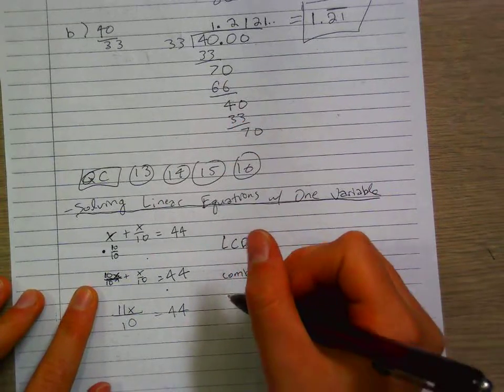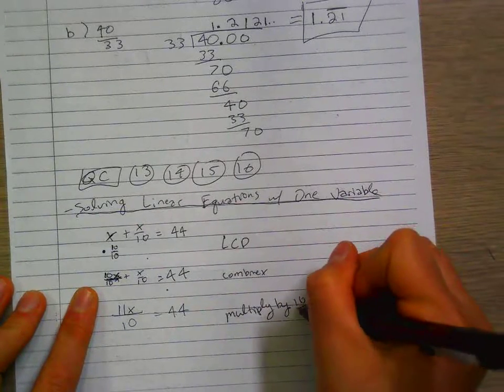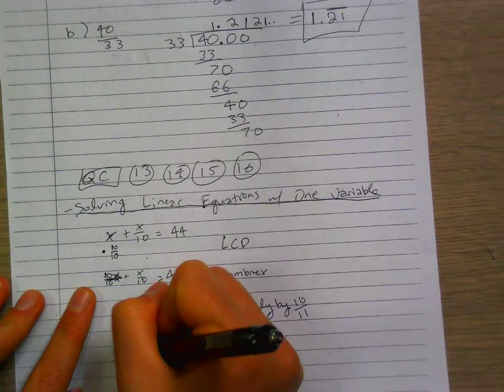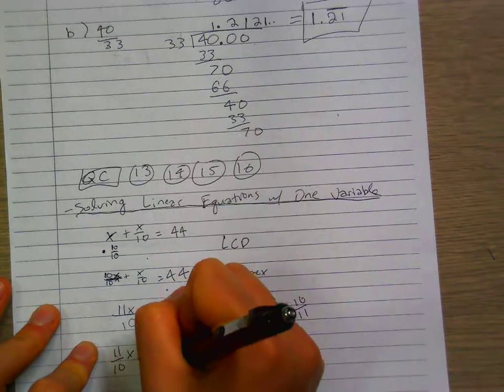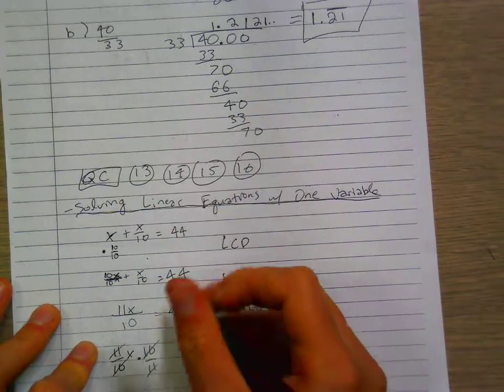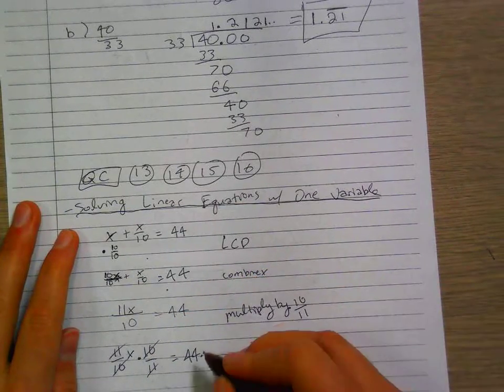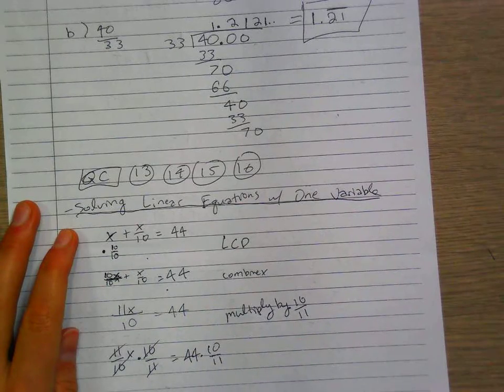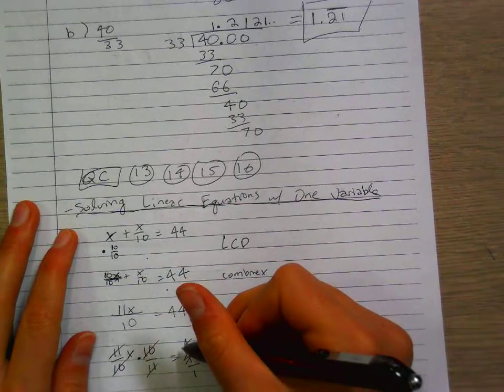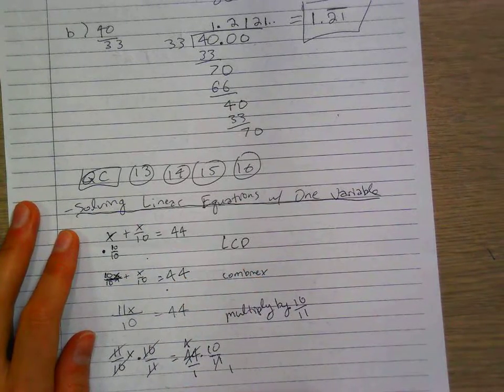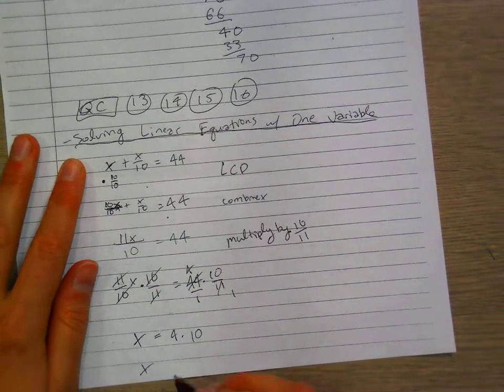Now you can multiply by 10 over 11 because if we want to get rid of this 11 over 10, we just multiply it by 10 over 11. These cancel, we're left with x because we want to put x by itself. Then 44 times 10 over 11. We can simplify by putting this over 1. We can divide that by 11, it's 4. It just becomes 4 times 10. x equals 40.